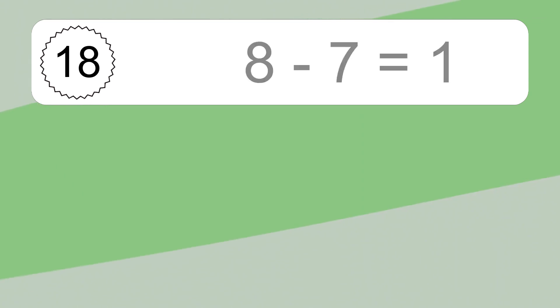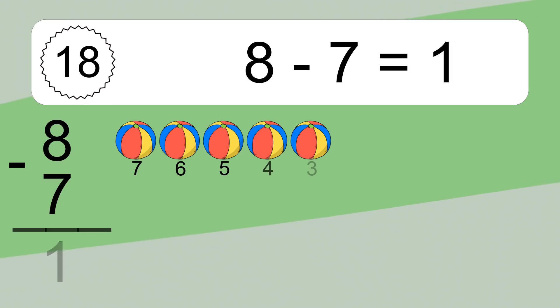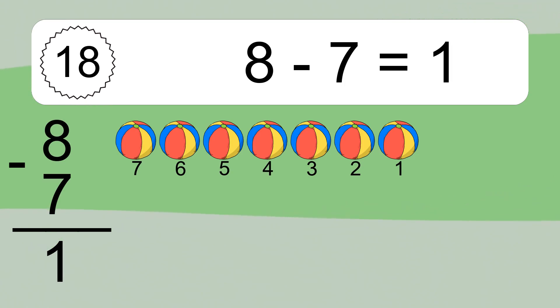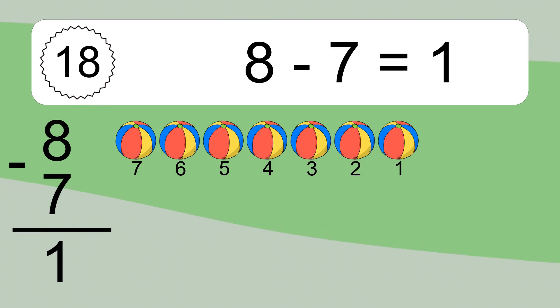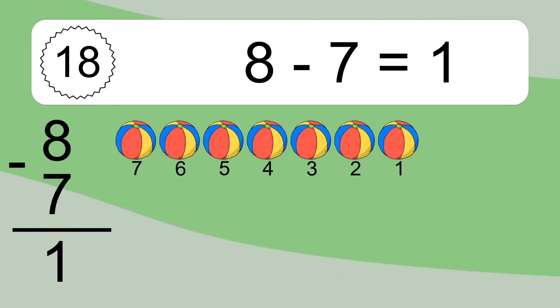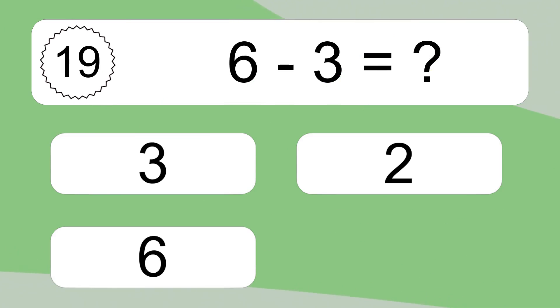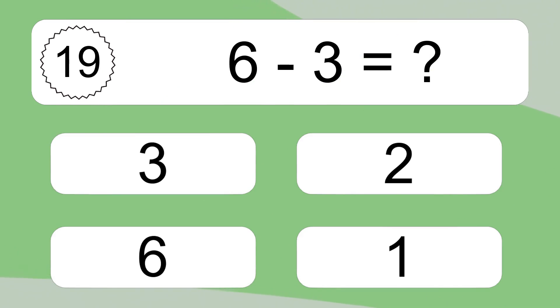8 minus 7 equals 1. Let's count it: 7, 6, 5, 4, 3, 2, 1. 6 minus 3 equals what?